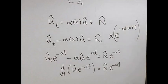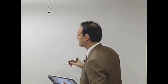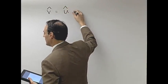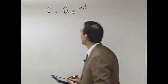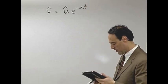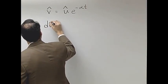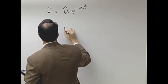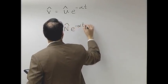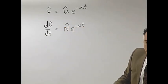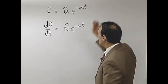So what I want to do then is make a transformation of variables. I'm going to define a new variable, call it v̂, which will be û e^(-αt). And then this equation that we have here simply becomes dv/dt is equal to... there you go.